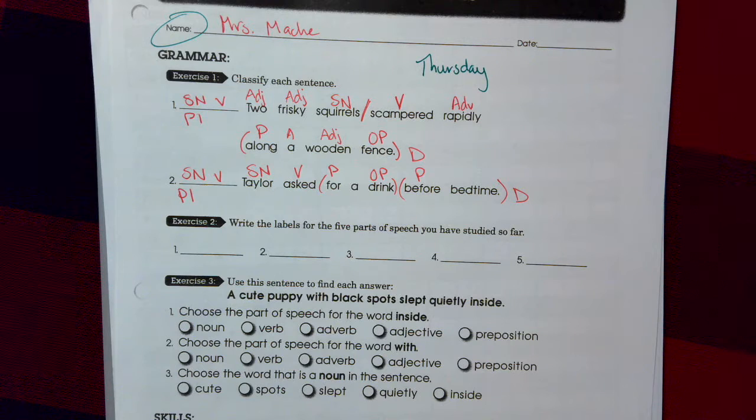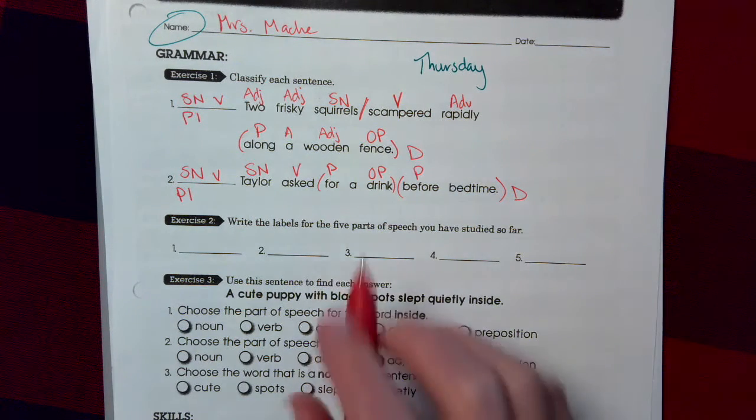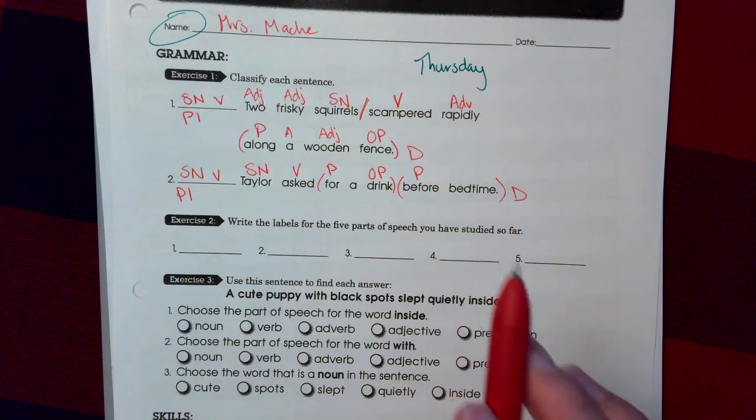Okay. So you should have divided the complete subject from the complete predicate. You should have a label above A and you should have a label above bedtime.